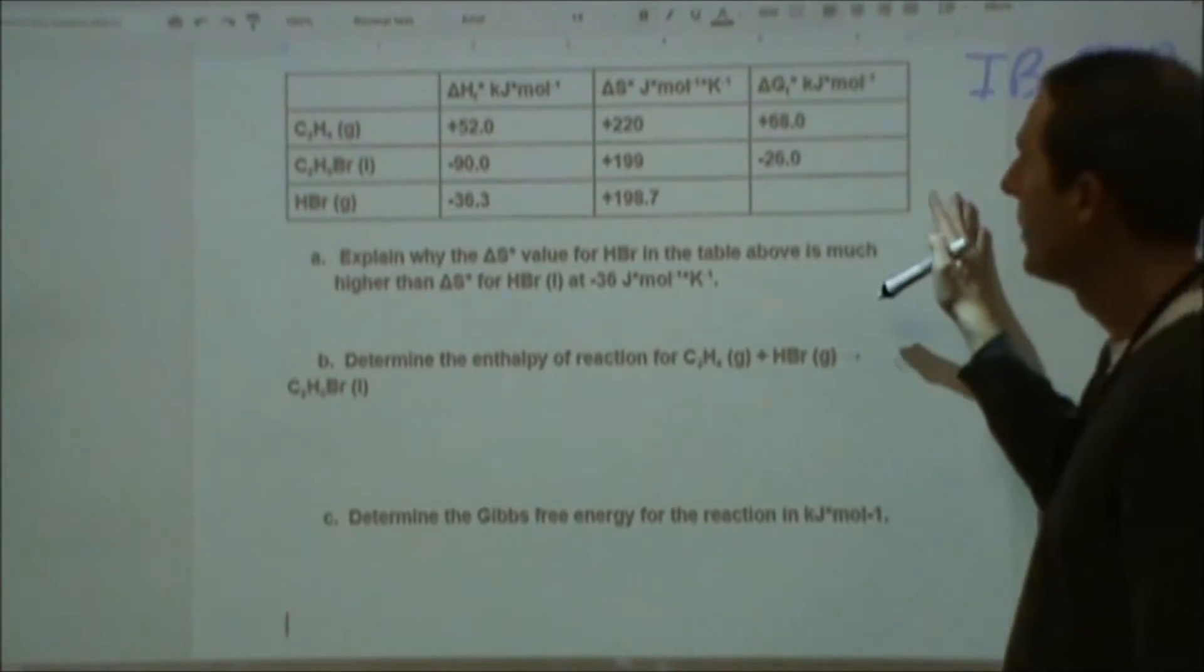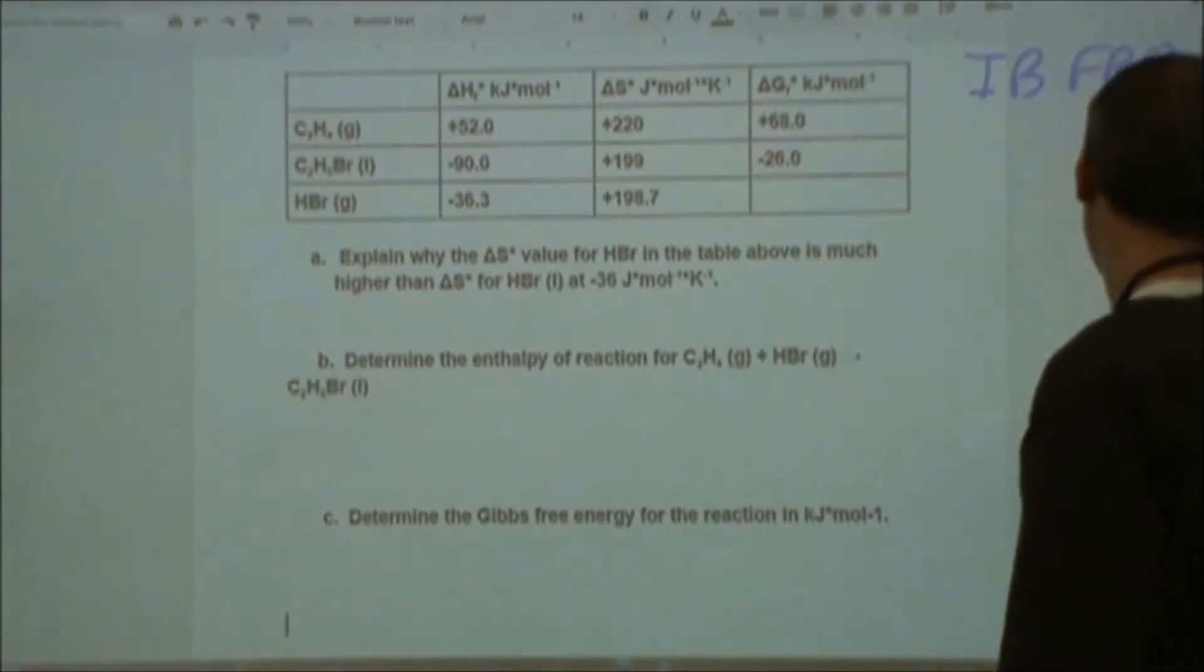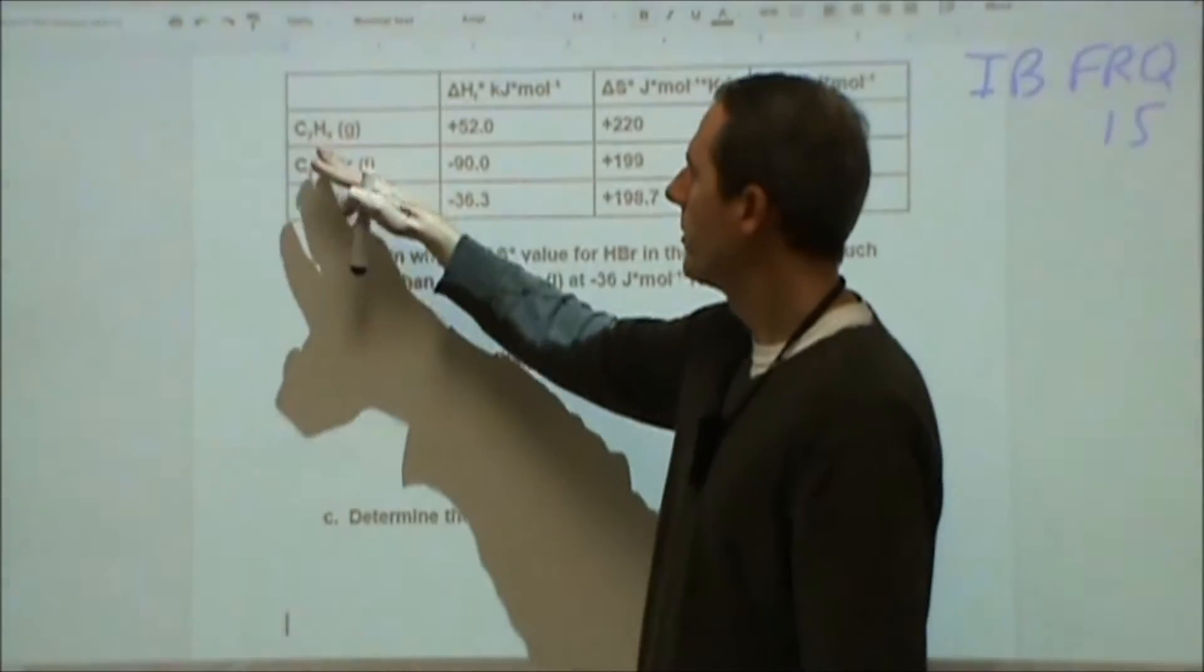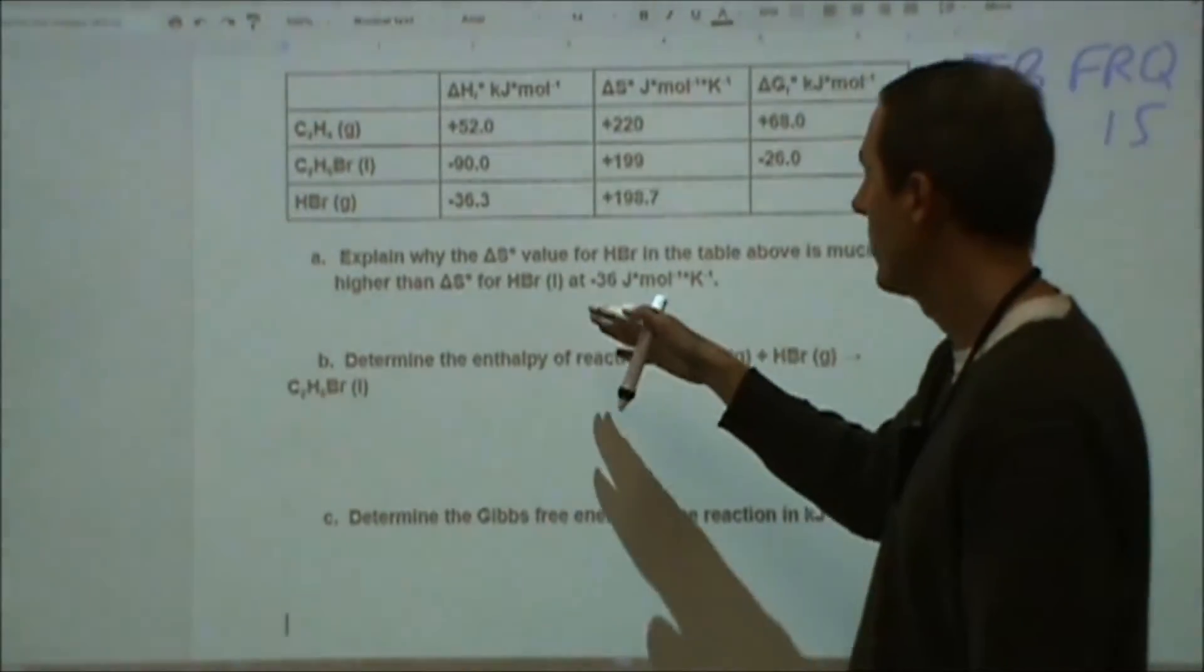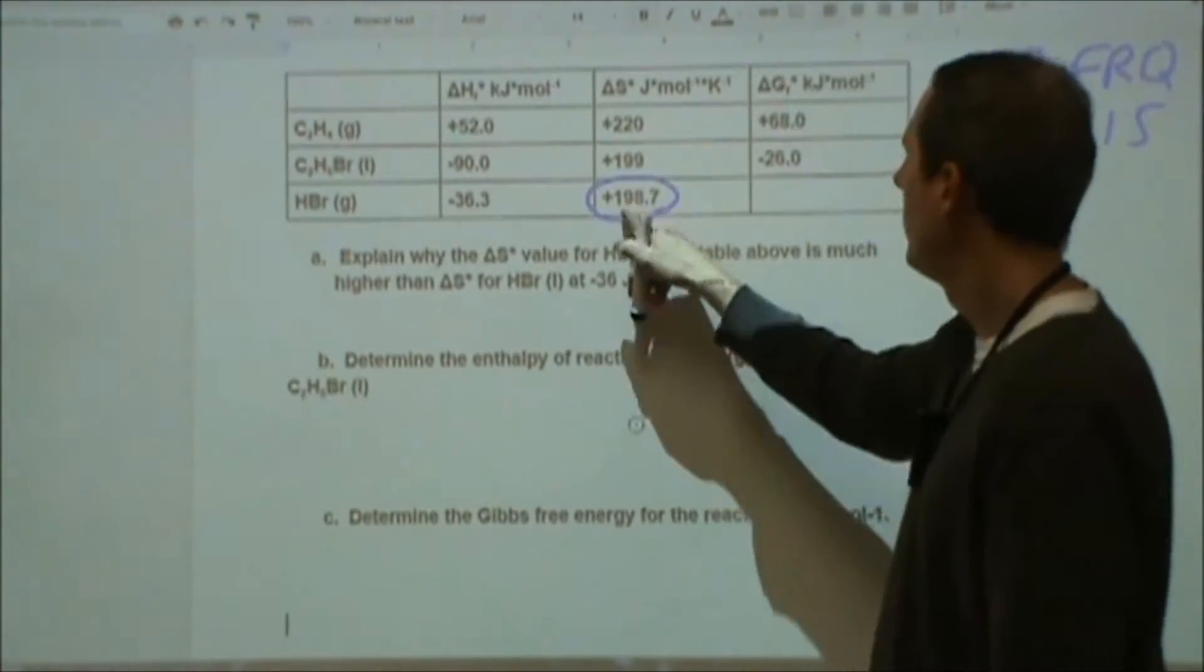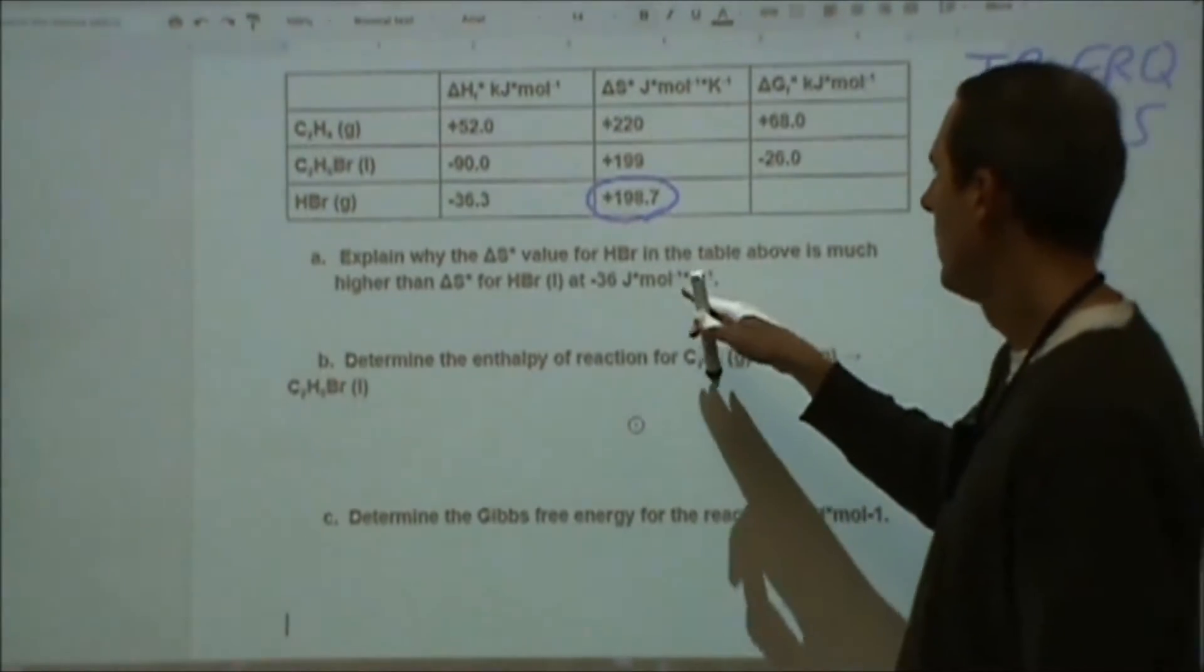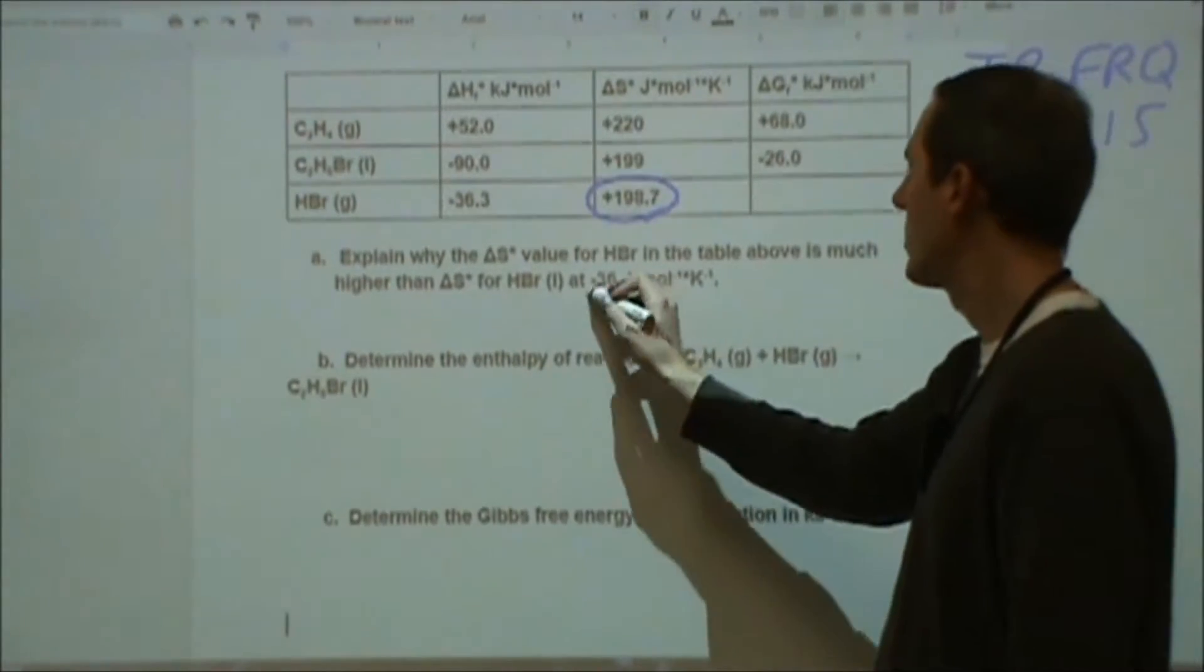Here we go. We have a bunch of information, we've got some enthalpy of formation values, some standard entropy values, and some free energy formation values all in a chart for three chemicals that are going to undergo a reaction. Part A says explain why the entropy value for HBR that's here in the chart, which is plus 198.7 joules per mole Kelvin, is so much larger than the value for the liquid form of this, which is negative 36.